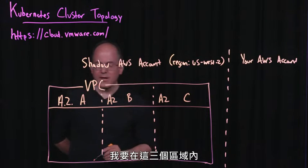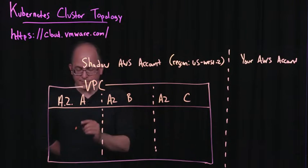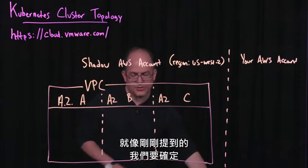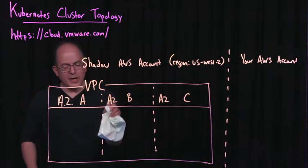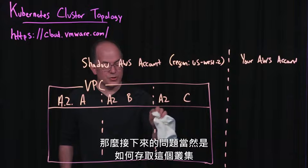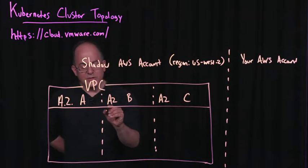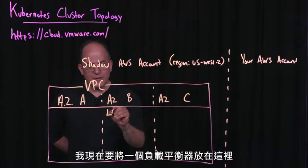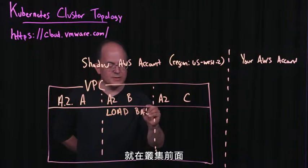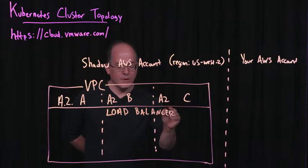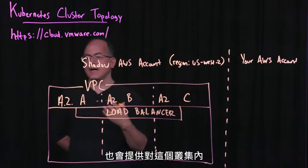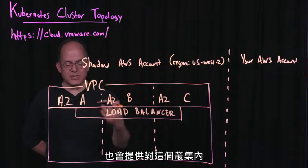Within these zones, I'm going to go ahead and create the cluster. The virtual machines are available only on private networks, so of course the question is begged: how do you get access to the cluster? I'm going to put a load balancer here in front of the cluster. This load balancer will span the three availability zones and will provide access to all of the necessary machines within the cluster.